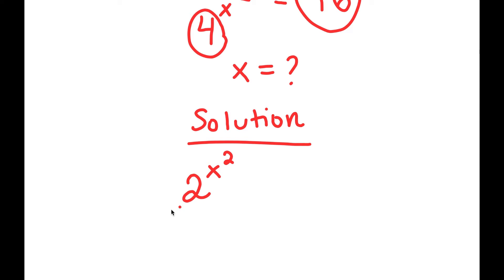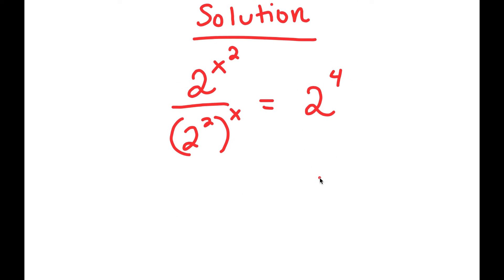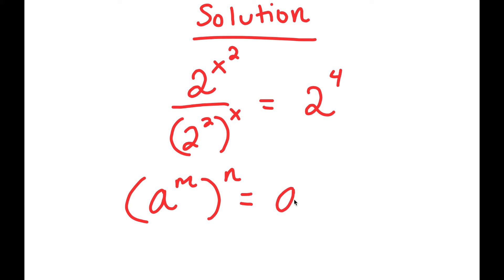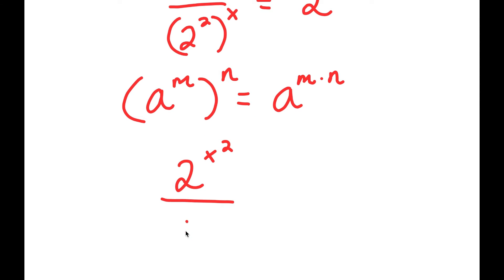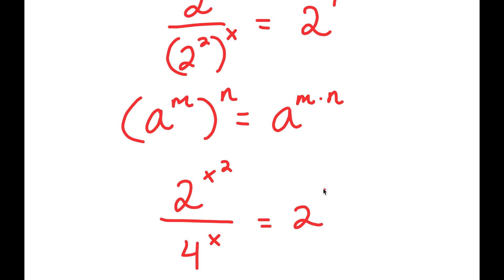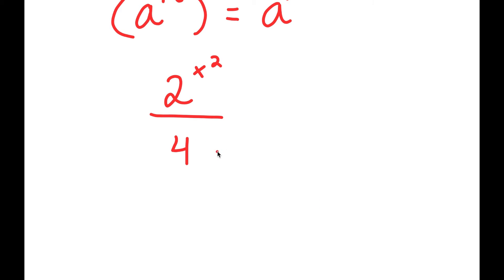So I get 2 to the power of x squared over 2 squared to the power of x, is equal to 2 to the power of 4. Now from here, if I have something in the form a to the power of m to the power of n, this is equal to a to the power of m times n. So 2 squared to the power of x — sorry, this is not 4 to the power of x, this is actually 2 to the power of 2x — which is equal to 2 to the power of 4.